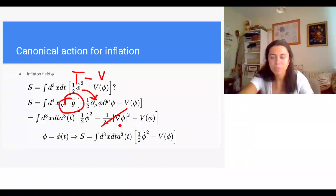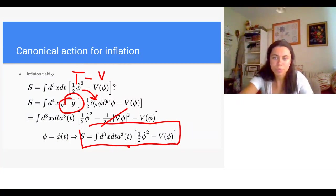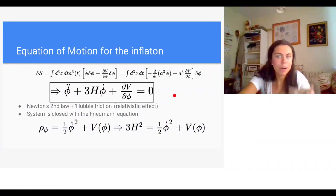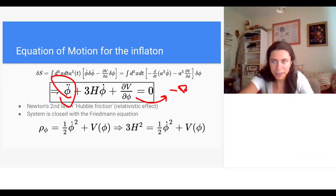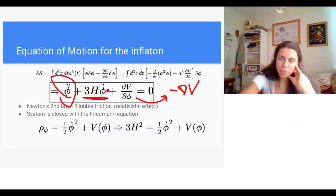Expanding the covariant kinetic term with the flat FRW metric gives the action for inflation. The cosmological principle tells us the universe is homogeneous, so we can assume the inflaton doesn't depend on space and drop the gradient term. Varying the action via the Euler-Lagrange equations gives the equation of motion for the inflaton — really like Newton's second law, with an acceleration term, a force term from minus the gradient of the potential, and a Hubble friction term proportional to H times φ-dot.